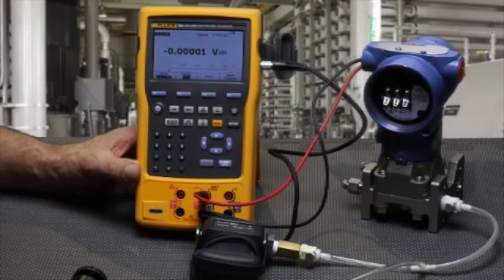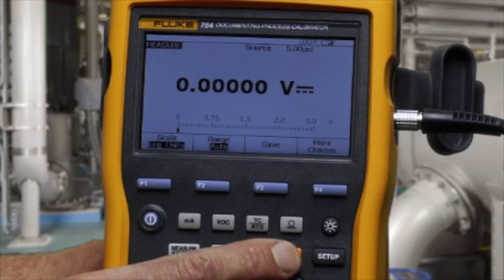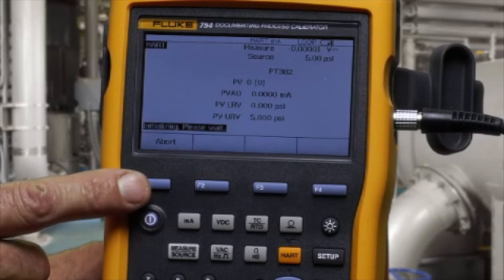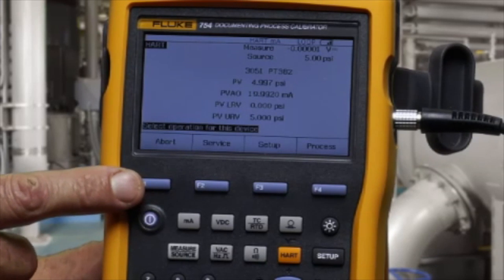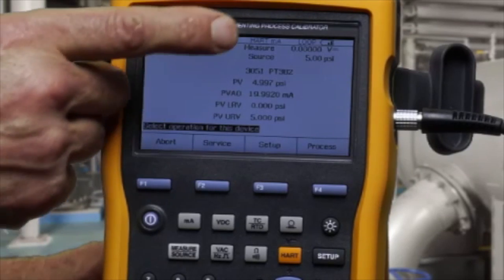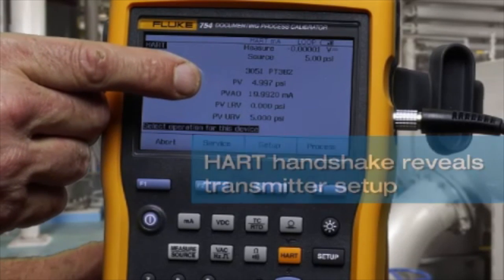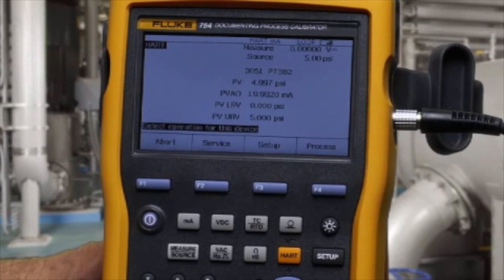To initiate the test, select HART and initiate communication with the transmitter. You can see the tag, the PV, the PVAO, and the ranging of the transmitter.